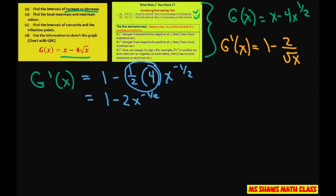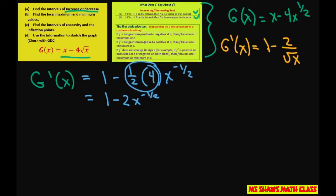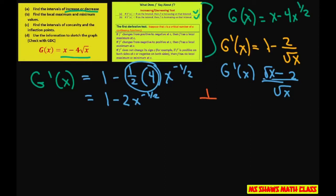Now to help us find the critical numbers, let's go ahead and factor out 1 divided by the square root of x. If you do that, you're going to have to change the 1 to square root of x over square root of x, so basically I'm rewriting this as the square root of x minus 2, all over square root of x.